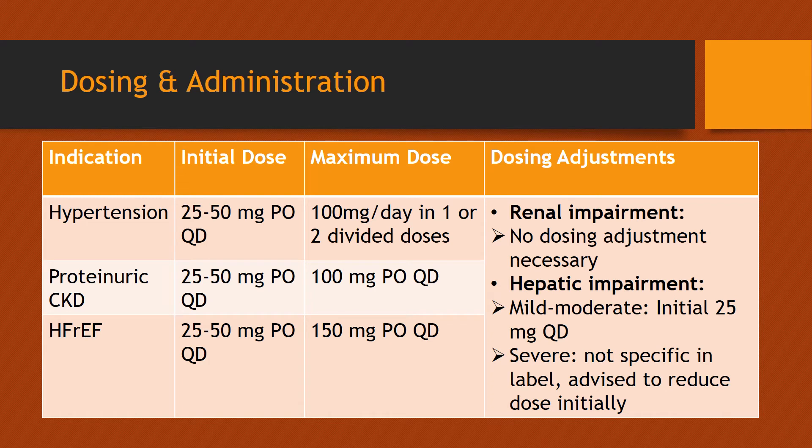For most indications, Losartan can be started at 25 to 50 mg orally once a day. For treating or managing hypertension, the maximum dose is 100 mg a day in one to two divided doses. The maximum dose for treating proteinuric CKD patients and heart failure with reduced ejection fraction is 100 mg orally once a day and 150 mg orally once a day, respectively.